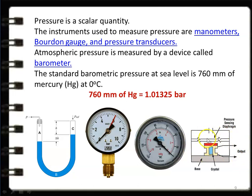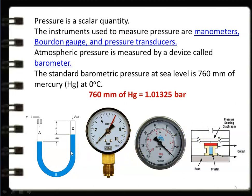The pressure transducer is an advanced device used in almost all industrial practices. U-tube manometers and Bourdon pressure gauges are standard devices with better accuracy than pressure transducers. However, all devices require periodic calibration for accuracy of results.